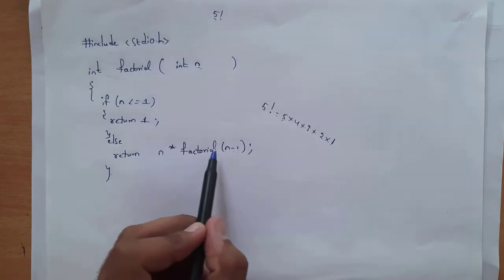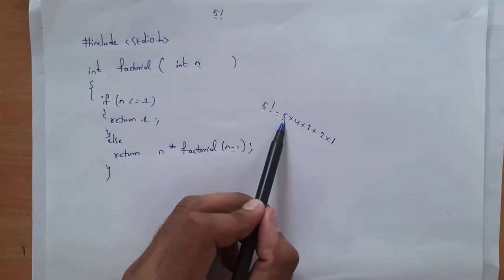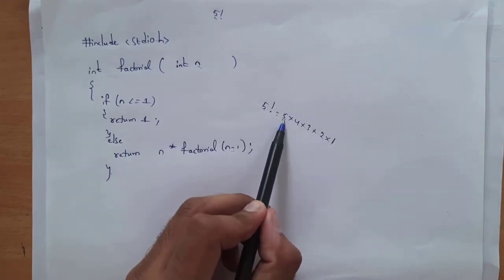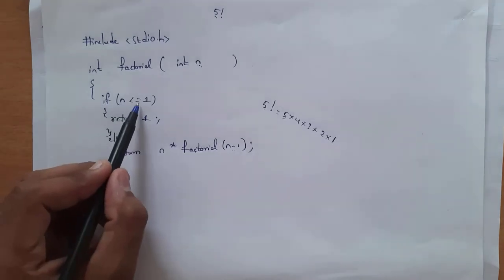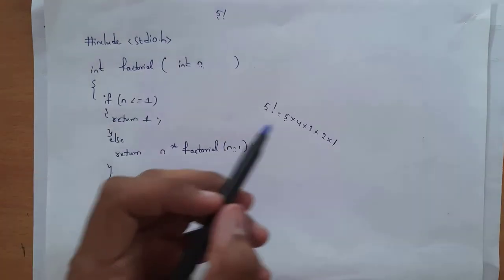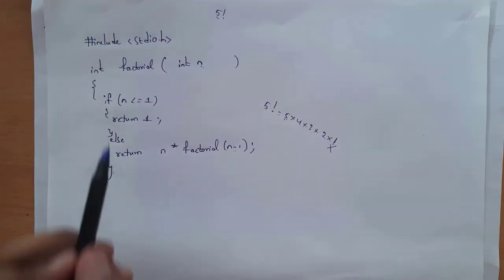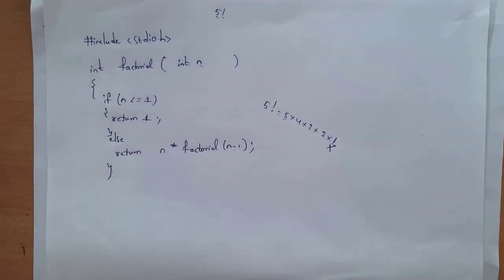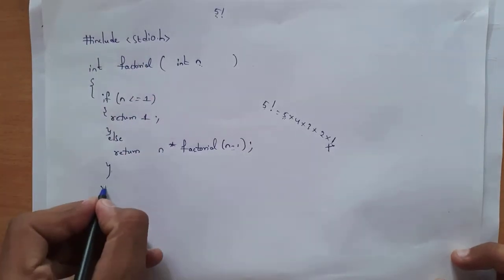Else return n into factorial of n minus 1. That is the formula of factorial — we start from that number and keep multiplying by decrementing each value until one. The condition is: if n is less than or equal to 1, return 1. Whenever we reach value 1 we need to stop, so by writing return 1 we can break this multiplication.